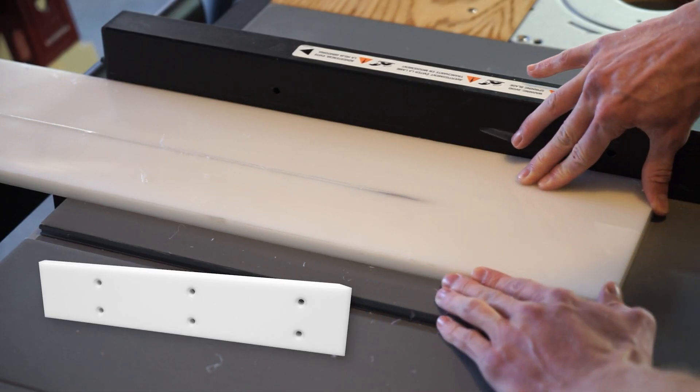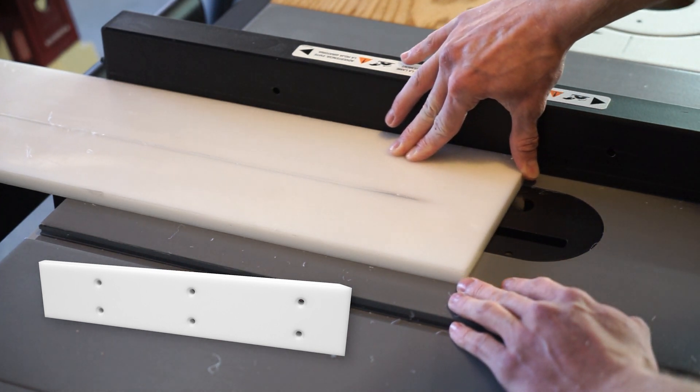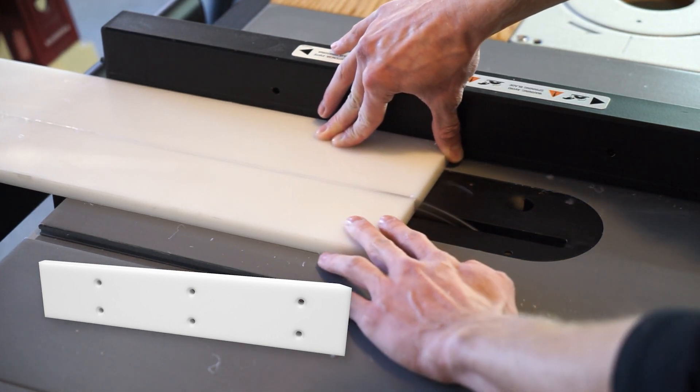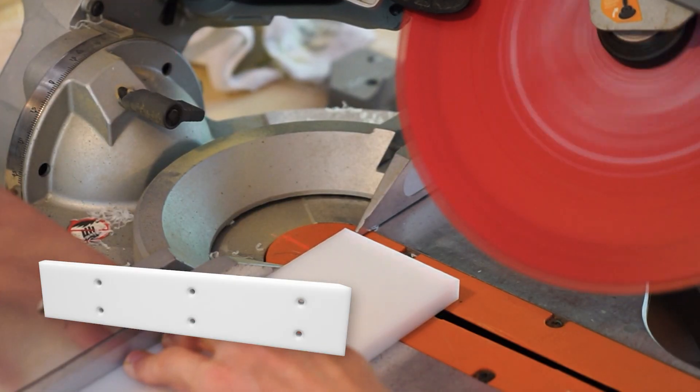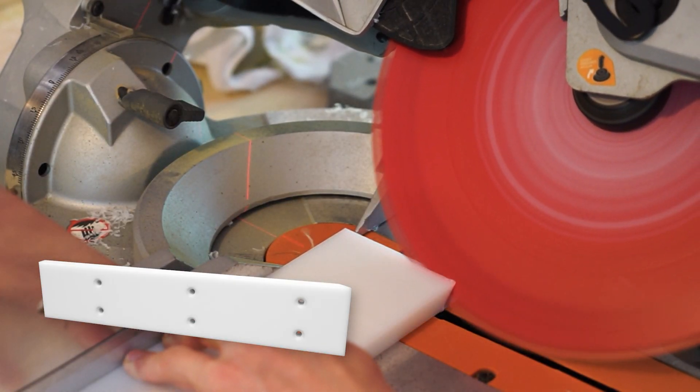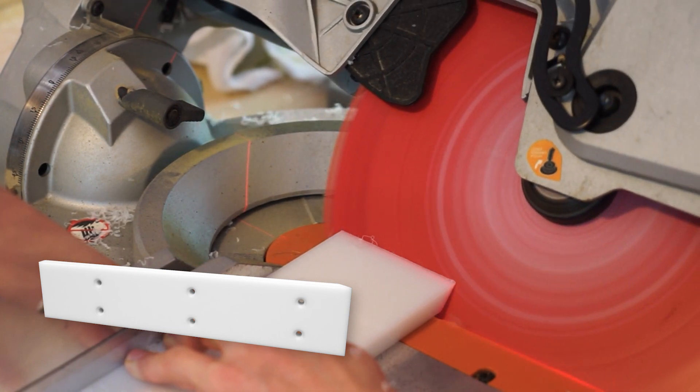HDPE is a non-stick, easy-to-machine plastic that is very resilient. It's frequently used in cutting boards. I used it for the faceplates on the backstop. It will allow me to push boards along the fence with minimal resistance.